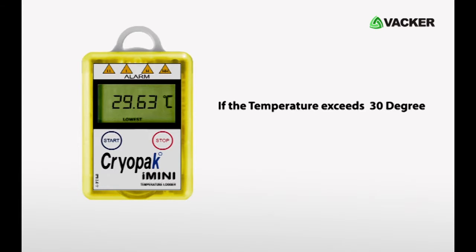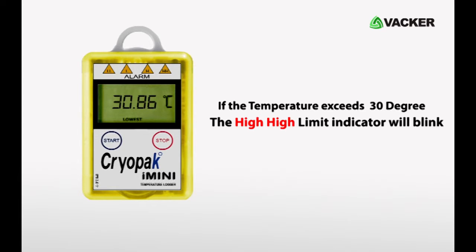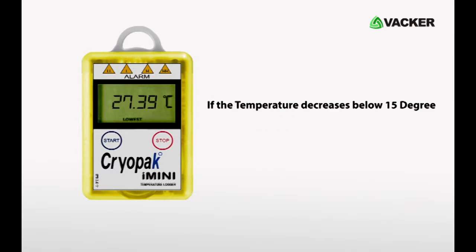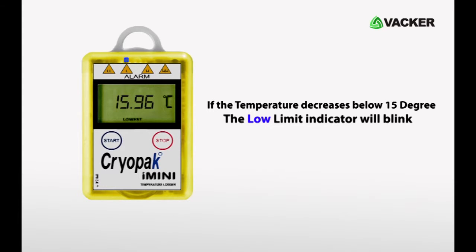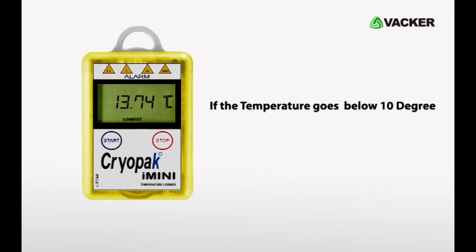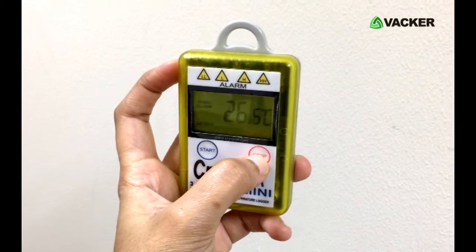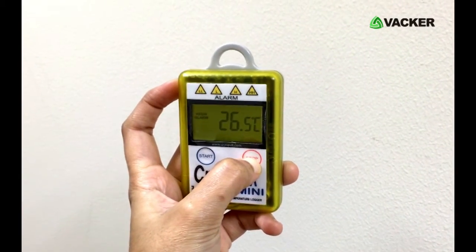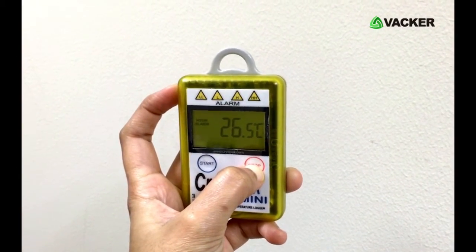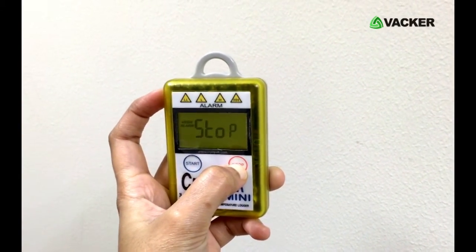If the temperature exceeds 30 degrees, the high-high limit will blink. If the temperature decreases below 15 degrees, the low limit indicator will blink. And if the temperature goes below 10 degrees, the low-low limit indicator will blink. To stop the logger, press the stop button on the right and you can see the word 'stop' on the screen.